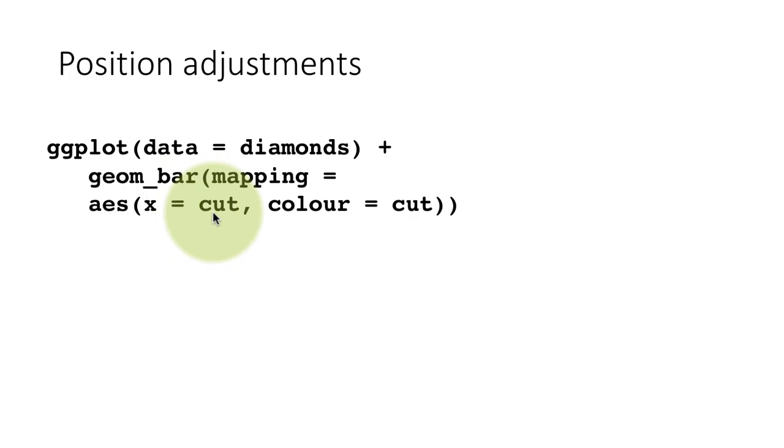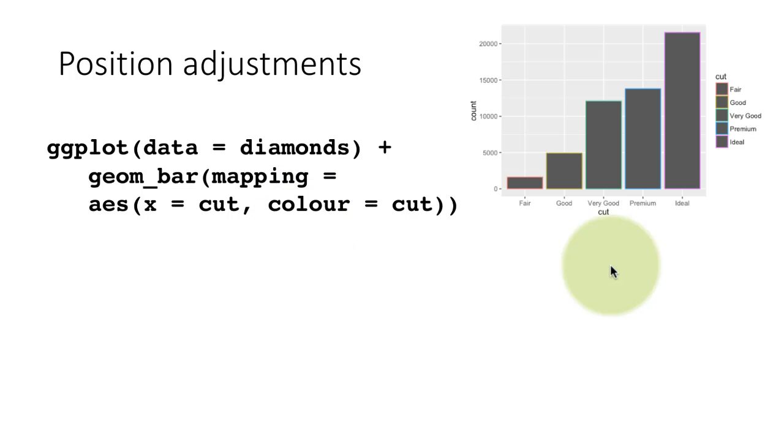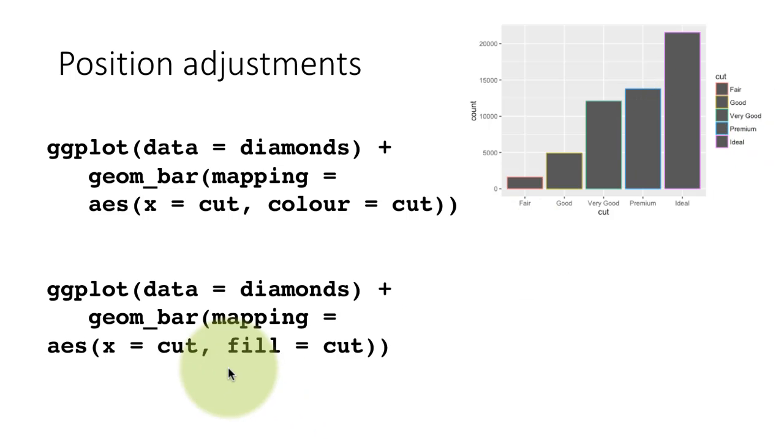For each different value of cut, we want a bar of how many diamonds have that value of cut, and then we are saying color equals cut. So we are just doing a color. What you see is not what we expected, because we thought the color of the bars is going to be what we said here. But unfortunately, what color means is not the color of the bars itself. Let's first rectify that. Let's just say fill equals cut.